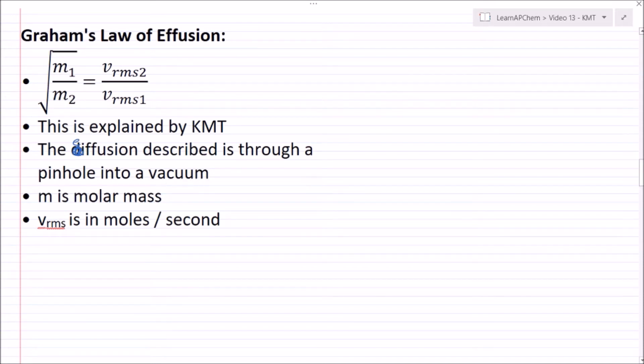Now our units here, M is molar mass and V_rms is in moles per second. So this is the velocity of moles escaping through the pinhole per second.